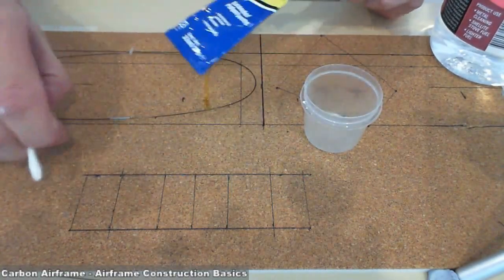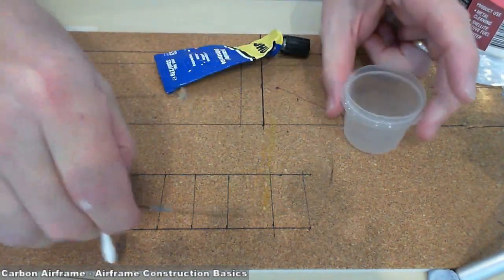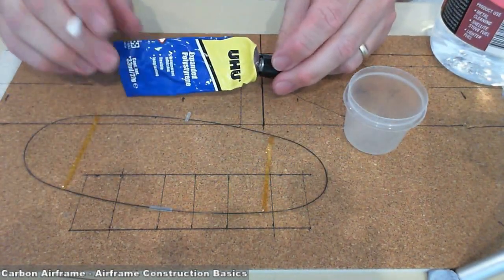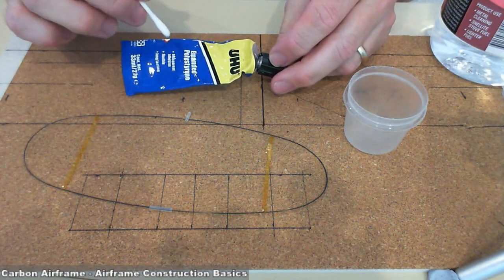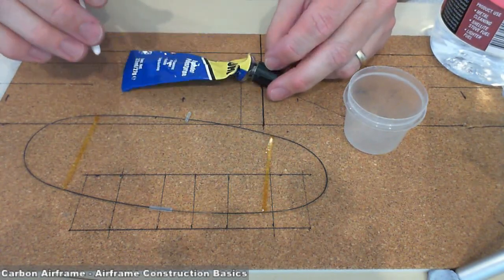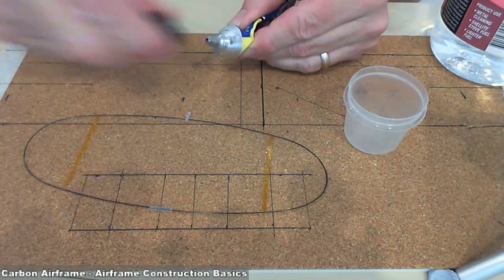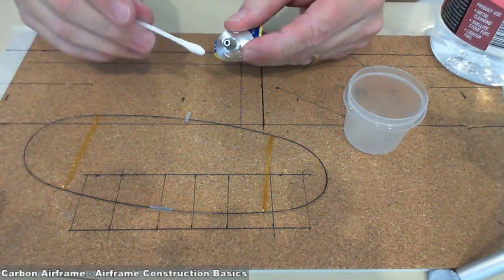We're going to have a look at attaching the mylar film to your airframe. We're going to use UHU pore glue, or UHU expanded polystyrene as it's now called. But if we use it just as it is, it's a little bit thick and it's going to add too much weight to the airframe.